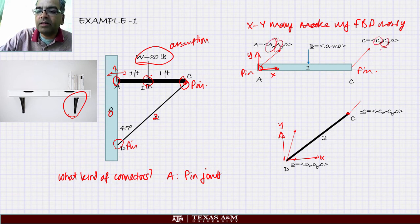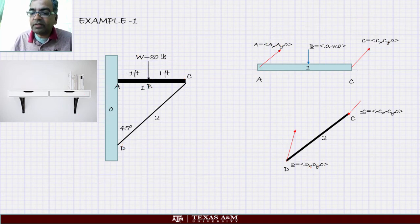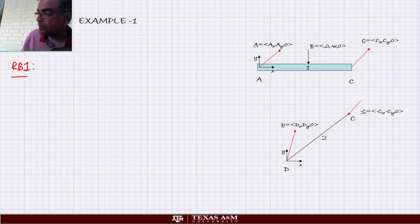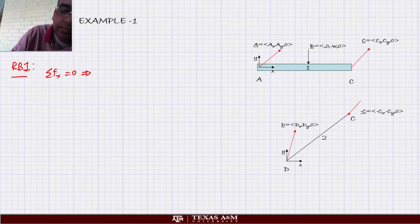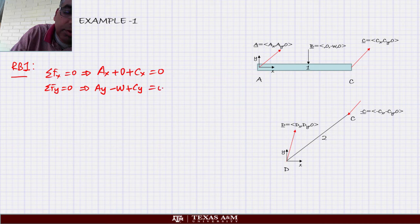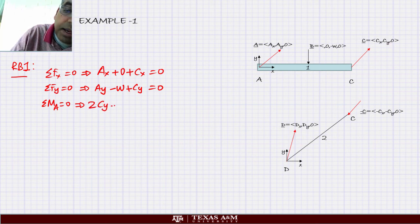The unknowns are: AX, AY (that is 2), CX, CY (that is 2), DX, DY (that is 2) — so six equations and six unknowns. No augmentation needed. For rigid body 1: summation of forces in X gives AX plus CX equal to 0. Summation of forces in Y gives AY minus W plus CY equal to 0. Summation of moments around point A gives 2 times CY minus 1 times W equal to 0.